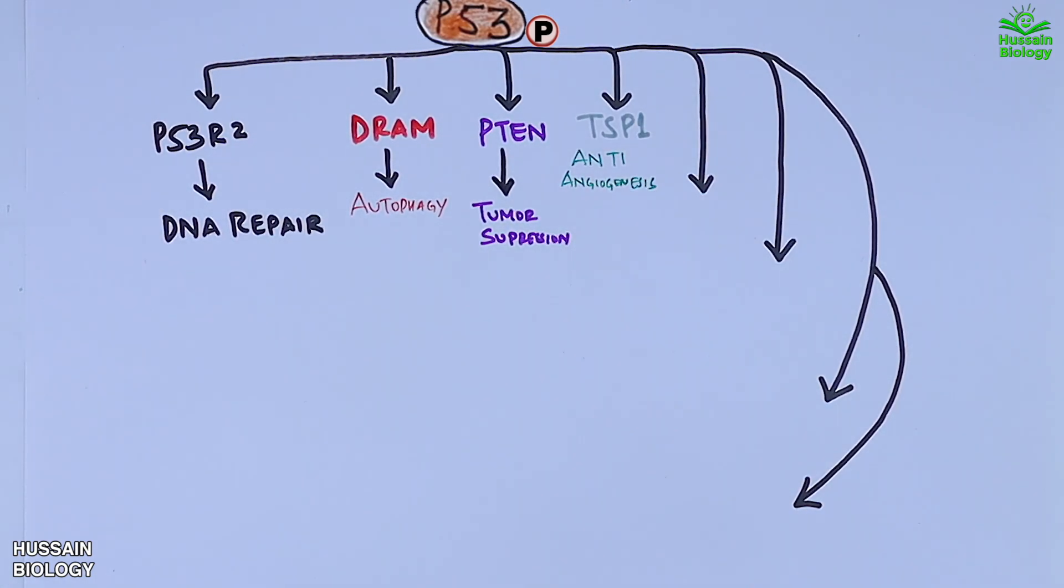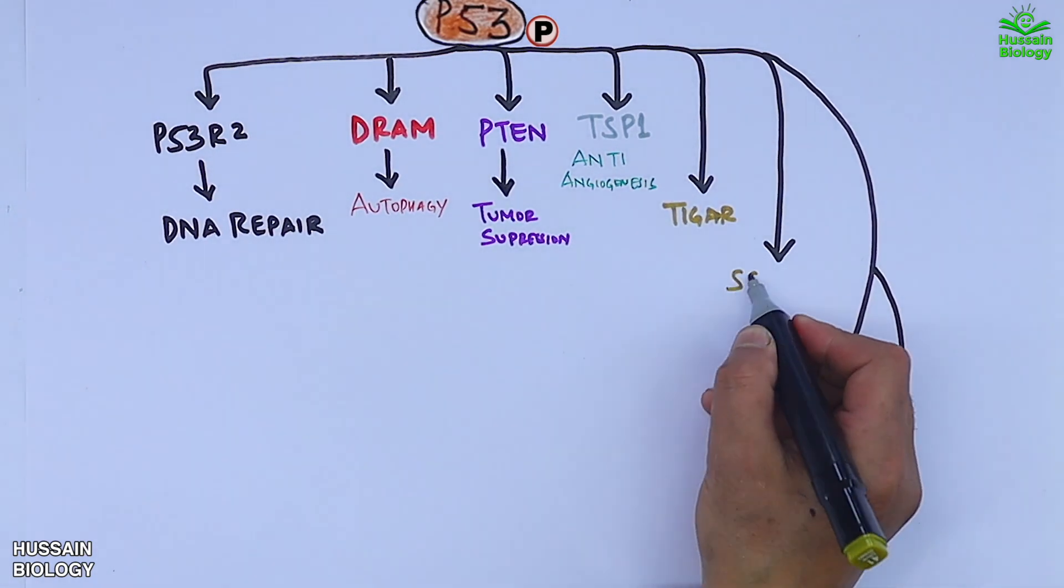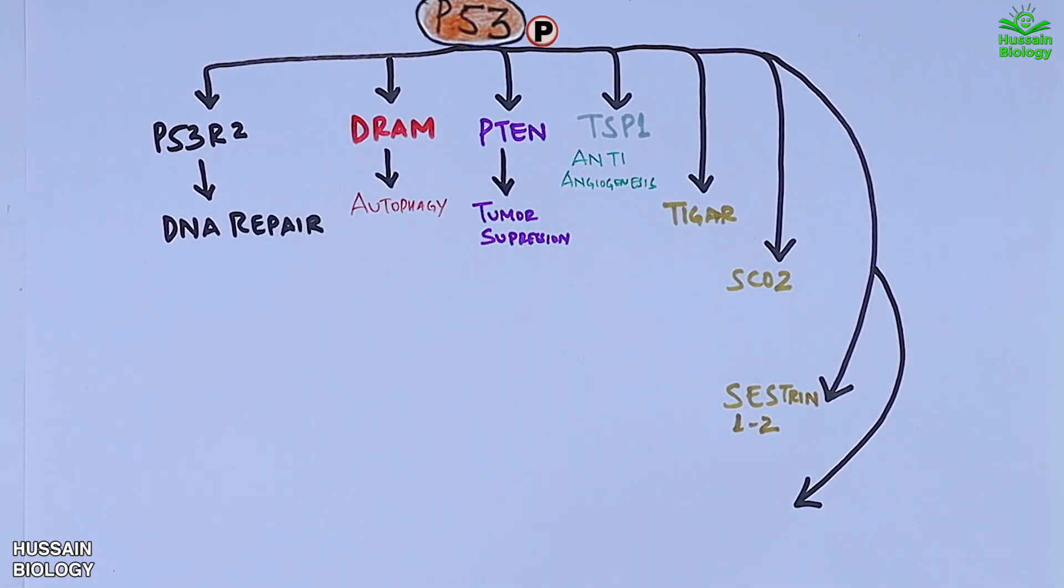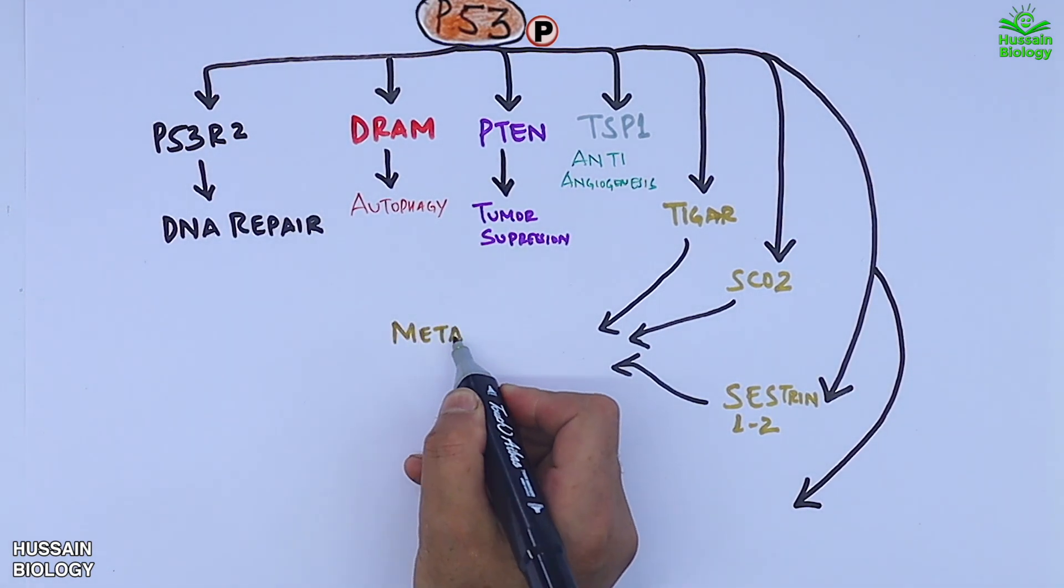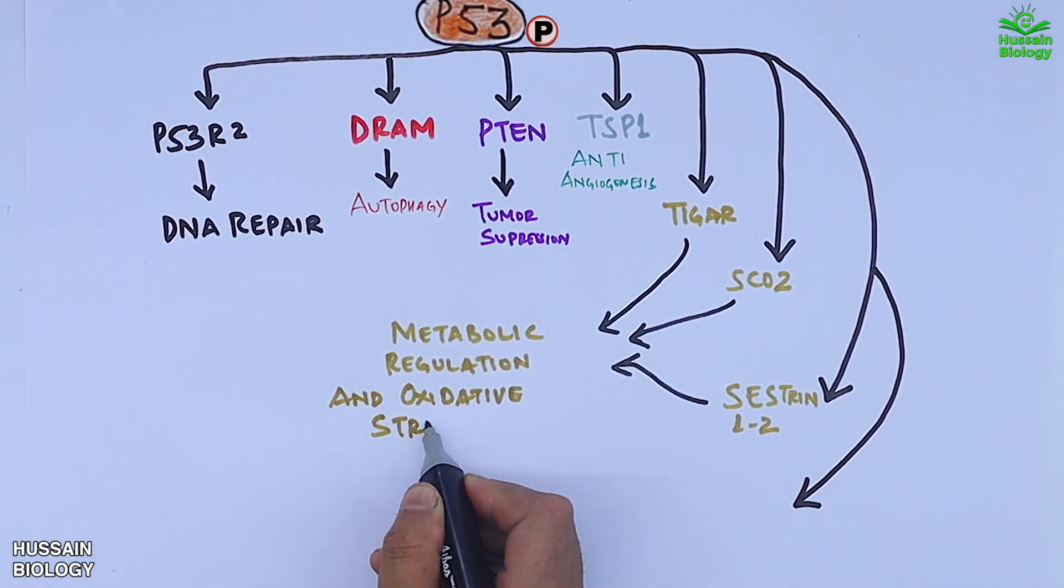Then p53 activates TIGAR, SCO2, and SESN1-2. These three proteins drive metabolic regulation and oxidative stress control.